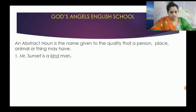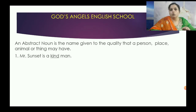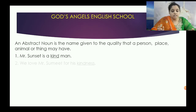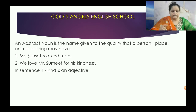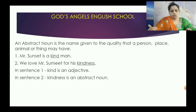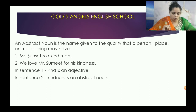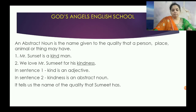Now here is an example. Mr. Sumit is a kind man — so 'kind' is the quality. Big, fat, tall, short — koi bhi aisa word, wo sara abstract noun jaega. Jo chizhe humko dikha nahi hai. We love Mr. Sumit for his kindness. In sentence 1, 'kind' is an adjective. In sentence 2, 'kindness' is an abstract noun. See the difference. It tells us the name of the quality that he has.